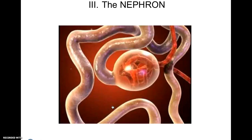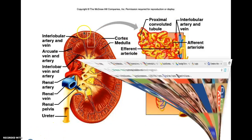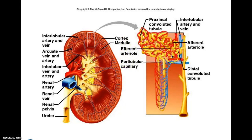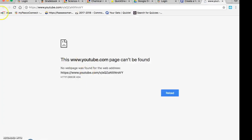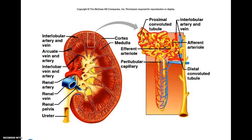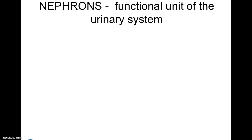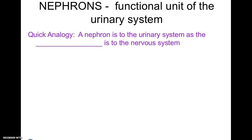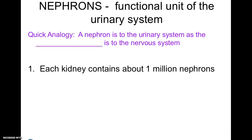Now we're going to talk about the functioning part of a kidney, called the nephron. The nephron is the functioning unit of the urinary system — just as the neuron is to the nervous system. You'll answer that analogy in the EdPuzzle. Each kidney contains about one million nephrons. You have the renal corpuscle, which is composed of a tangled cluster called a glomerulus that filters the fluid.